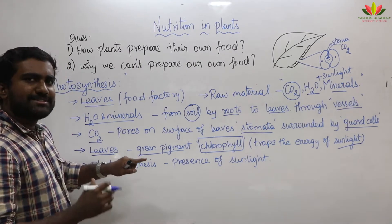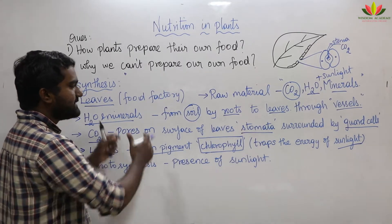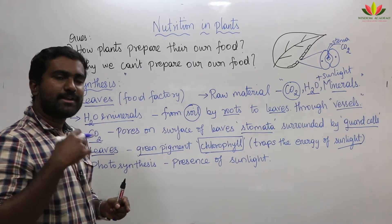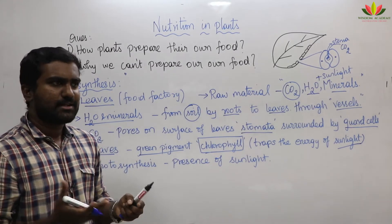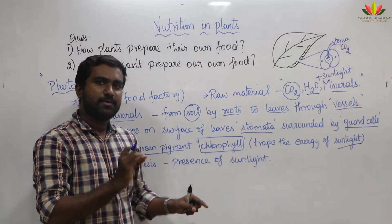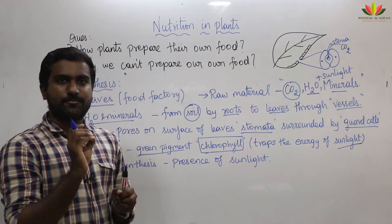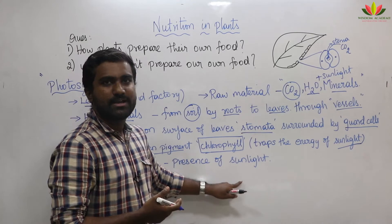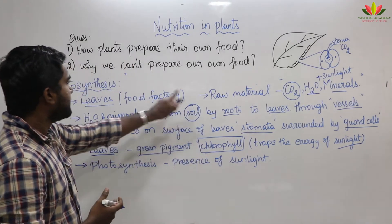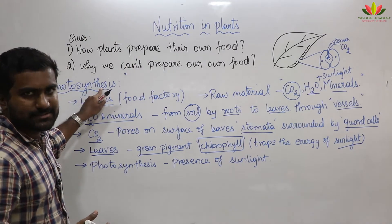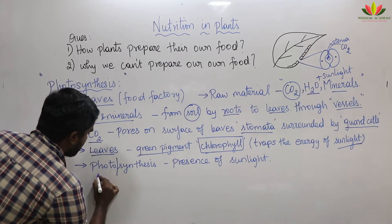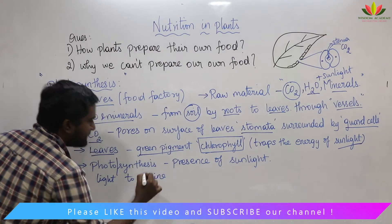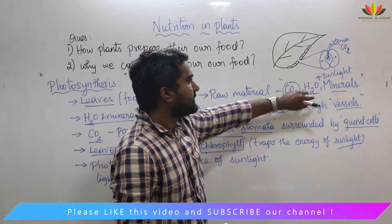Hence this process is called photosynthesis. The reaction takes place in the presence of sunlight. That's why photosynthesis does not happen at night — plants will prepare their food only during daytime. The word 'photo' means light and 'synthesis' means to combine. By using this light, we are combining carbon dioxide, water and minerals.